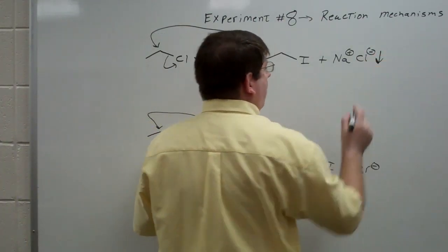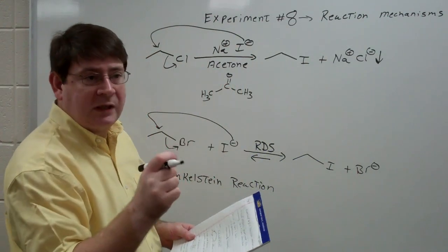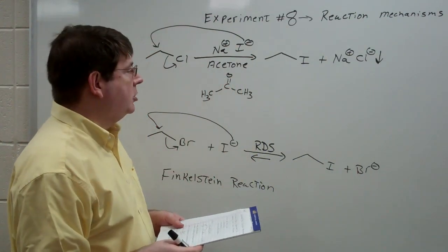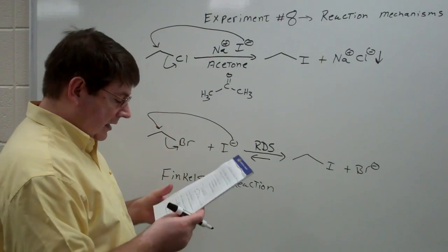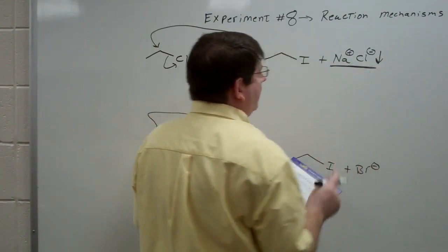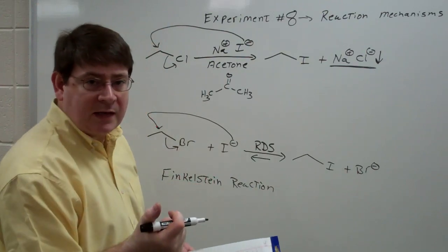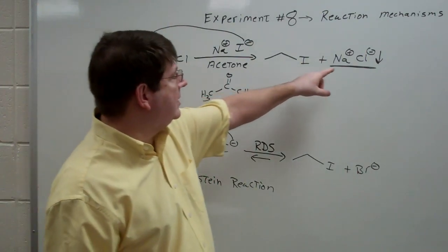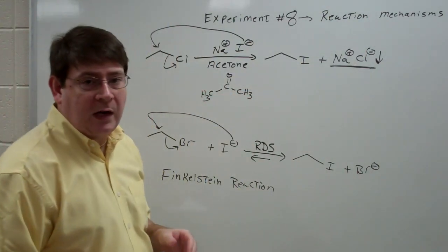We get our iodoethane product, plus you get sodium chloride, which is not soluble in acetone. And so it precipitates out. It forms a white precipitate. And you can actually visually see this in the reaction tube as the reaction progresses. And so what you're going to do is look for the appearance of the white precipitate. You're going to be timing this with a timer so that you'll know how long it takes for the sodium chloride to appear.